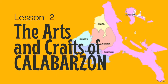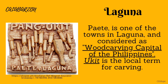Next are the arts and crafts of Calabarzon, particularly the provinces of Laguna, Rizal Province, Batangas, and Quezon. Paete, one of the towns in Laguna, is famous for its wood carving and is considered the wood carving capital of the Philippines. The local term for carving is Ukit. Paete carvers usually produce wooden religious images and wood panels with decorative floral patterns and geometric designs.